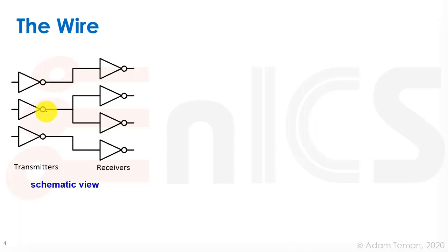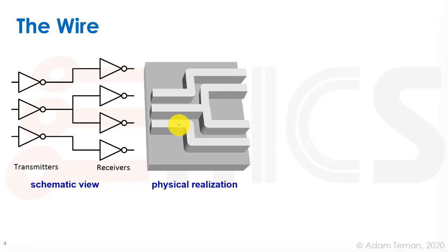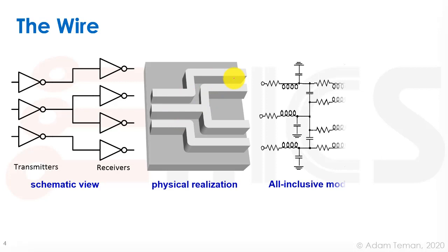So let's start with the first glance at interconnect. What is the wire? We usually take a schematic view that has inverters connected by wires to their fan-out. These are the transmitters, these are the receivers, and we just use these as an equipotential, perfect, ideal wire. But actually, when we make a physical realization — looking at a single metal layer — we see that these actually have height, width, and spacing between them.